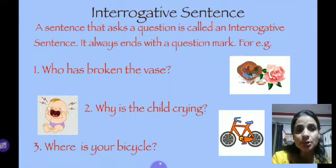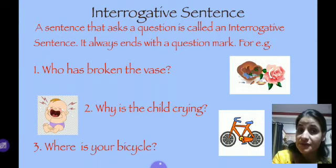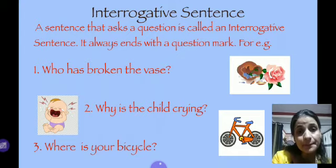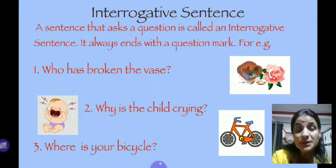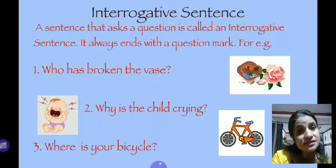Next is the interrogative sentence. A sentence that asks a question is called an interrogative sentence. It always ends with a question mark, so it is easy to identify. Examples: 'Who has broken the vase?' — we are asking a question, making a query. 'Why is the child crying?' 'Where is your bicycle?' These sentences are all interrogative sentences as they make a question.